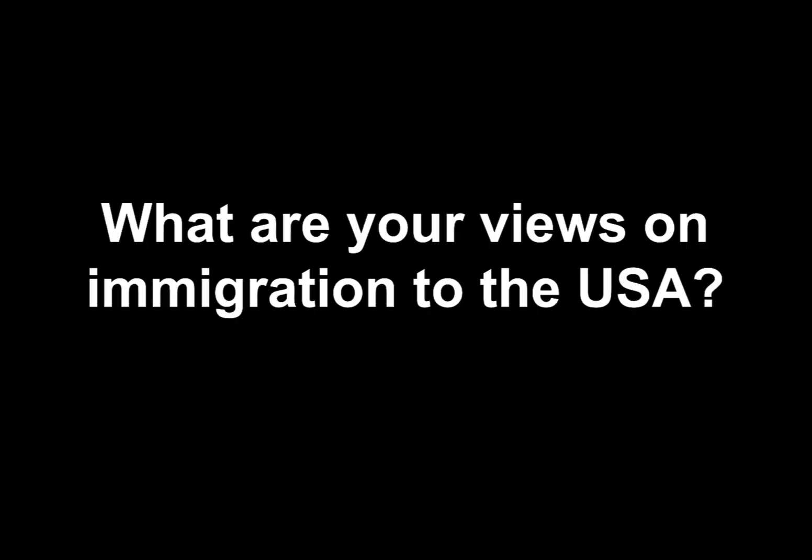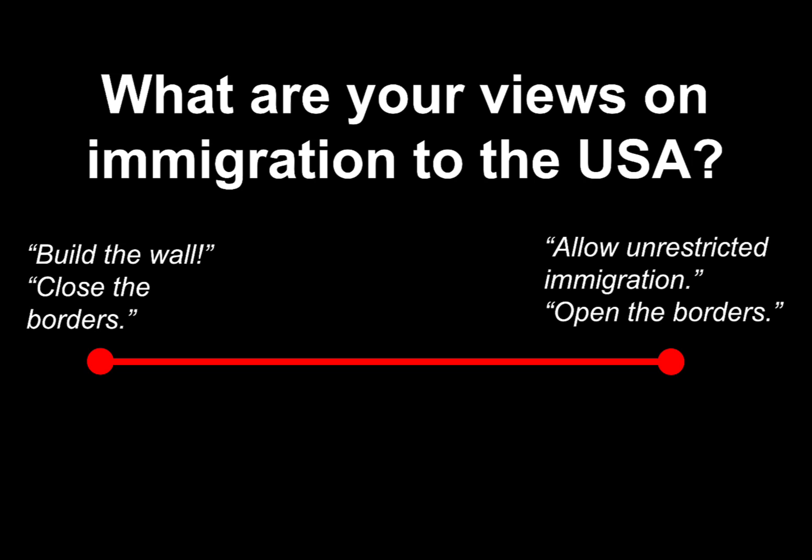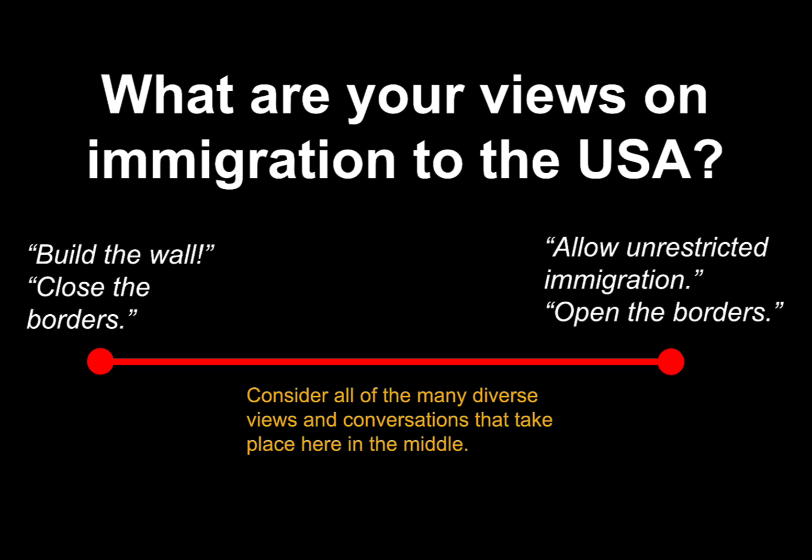Let's use an example to help us understand how to develop a concourse. I think most Q studies are best served with topics that lead to divergent types of opinions or viewpoints. So here's a good one: what are your views on immigration to the USA? If you have been following any of this, and if you turn on the talking heads or listen to some of the most radical voices on social media, you tend to have these two polar opposites. One might be build the wall, close the borders. On the other side, allow unrestricted immigration, open the borders. But I think we all know that intelligent conversations on this topic are probably taking place somewhere in the middle.